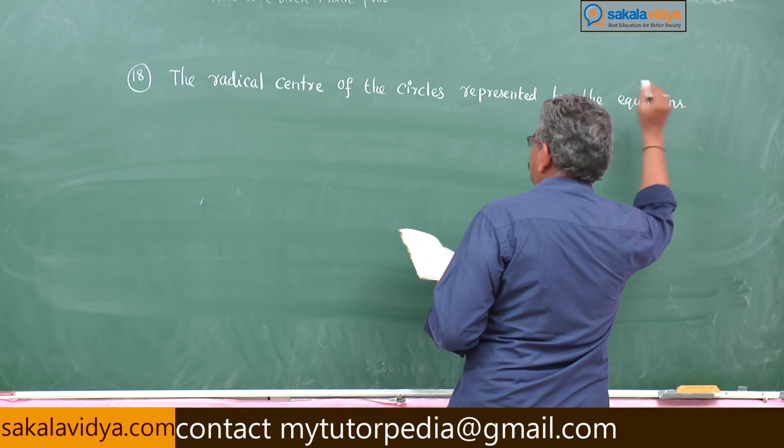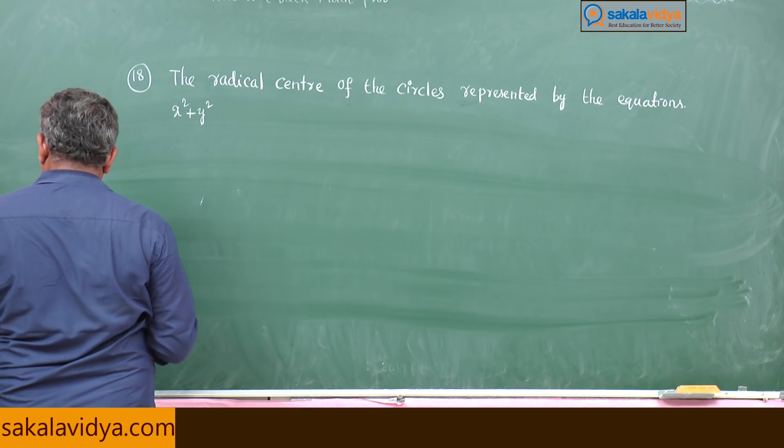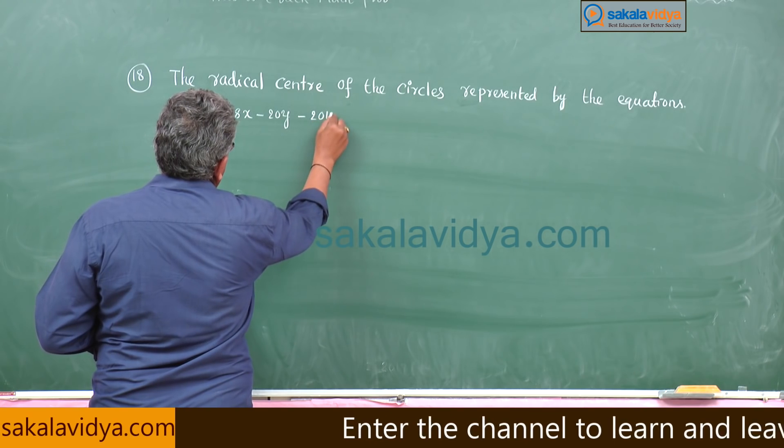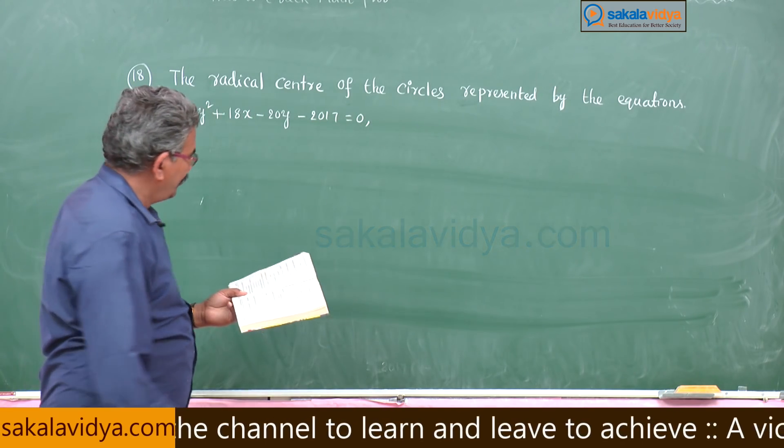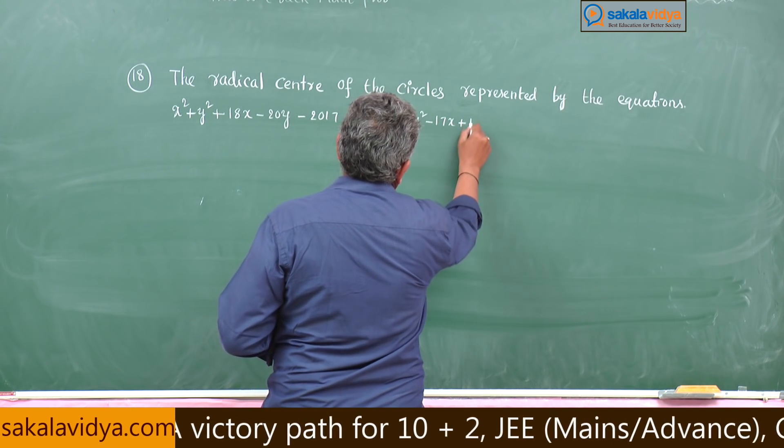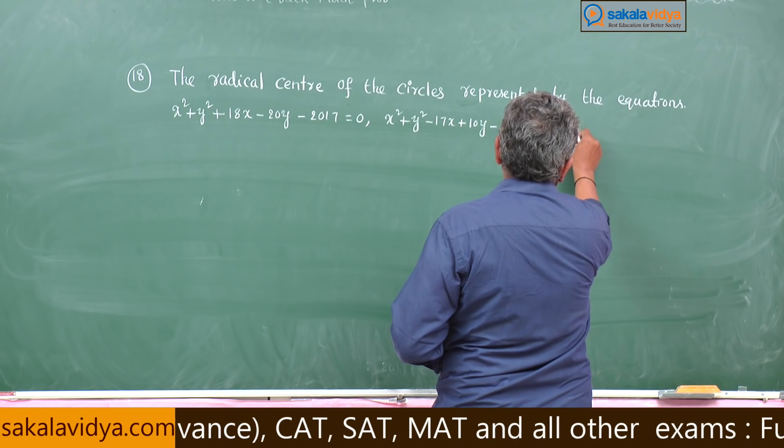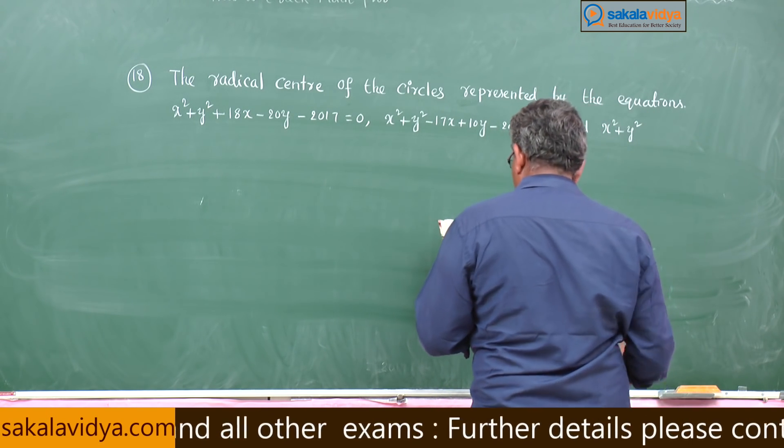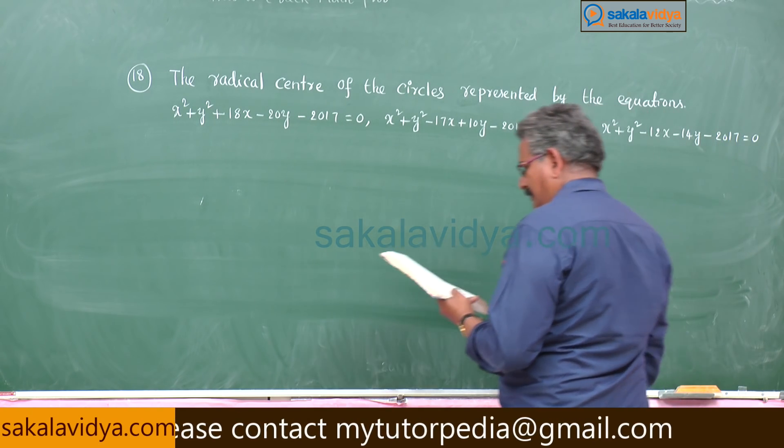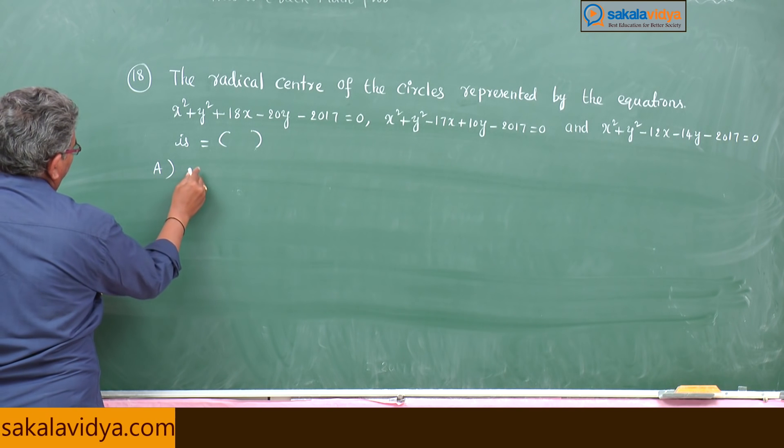x square plus y square plus 18x minus 20y minus 2017 is equal to 0, x square plus y square minus 17x plus 10y minus 2017 is equal to 0 and x square plus y square minus 12x minus 14y minus 2017 is equal to 0